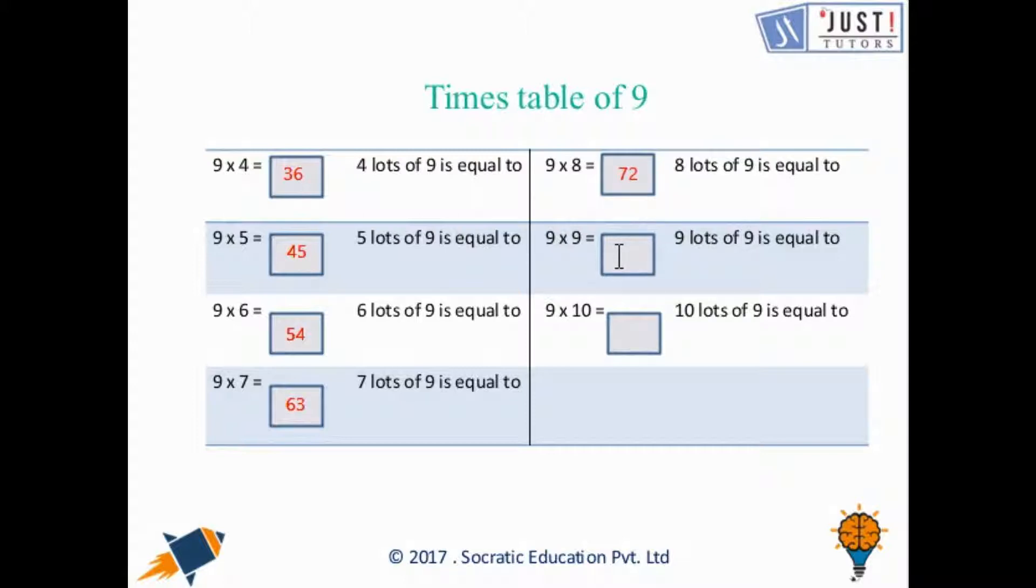9 times 9 is 81, and 9 times 10 is 90. In the time table of 9, we have added 9 each and every time.